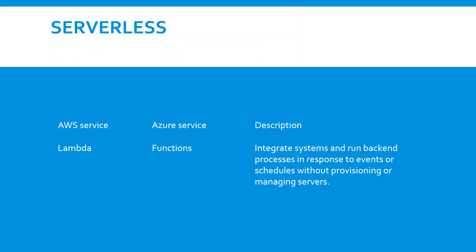On the topic of serverless, Azure Functions is the primary equivalent of AWS Lambda in providing serverless and on-demand code. However, Lambda functionality also overlaps with other Azure services, including Azure Web Jobs and Azure Logic Apps.